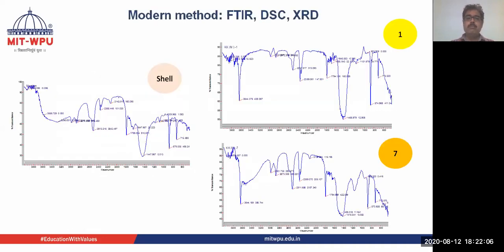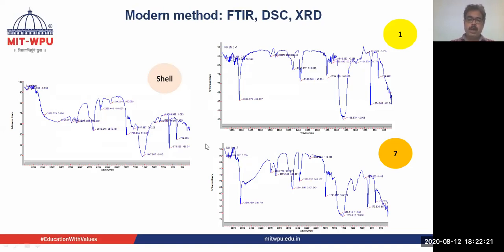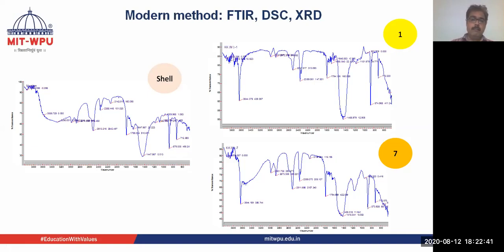Modern methods of evaluation include FTIR, DSC, and XRD. As an example for Kukurandatvak Bhasma: the FTIR of the raw shell, after first Puta, and after seven Putas shows sharp changes. We can see significant changes happening in the original drug as it converts into Bhasma across 1 Puta and 7 Putas. FTIR, DSC, and XRD can be used for the evaluation of Bhasma.